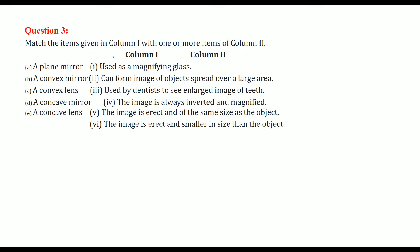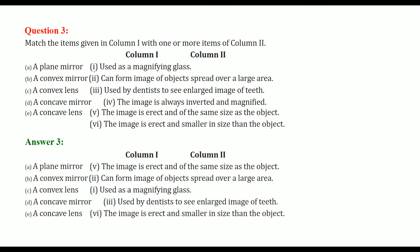Match the columns: A plane mirror matches with — it gives an erect image and same size as the object. A convex mirror matches with — it can form an image of objects spread over a large area. A convex lens is used as a magnifying glass. A concave mirror is used by a dentist, because they need to see an enlarged image of teeth. A concave lens gives an image that is erect and smaller in size than the object.